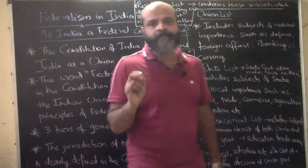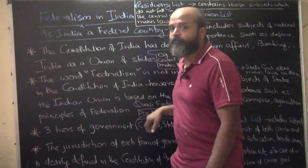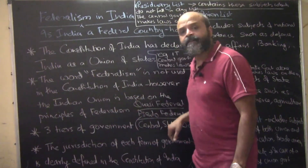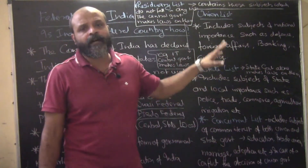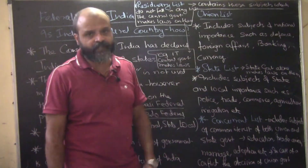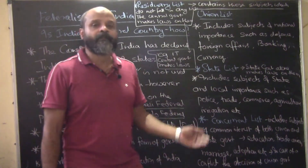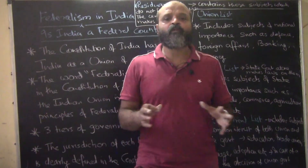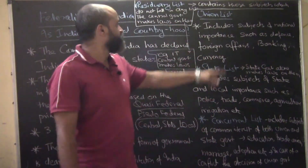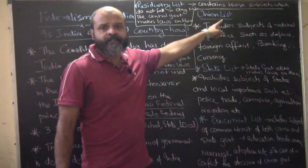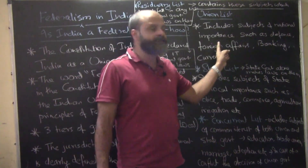There are different lists that specify the functions of all forms of government — central, state, and local. All these things are clearly specified in the different lists. We will go through the lists one by one and see what the jurisdiction is and what examples of governance fall under each. The first is the Union List, which includes subjects of national importance such as defense.